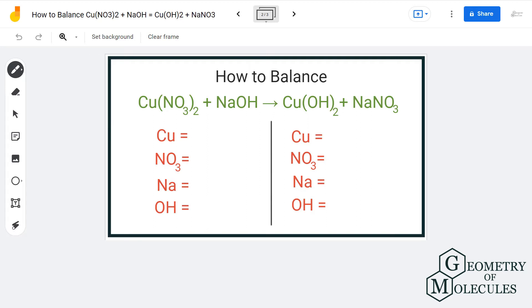We have one copper atom on the reactant side, one on the product side as well. We have NO3 group which are two in number for the reactant side, but we have only one group on the product side. For sodium we have one sodium atom on the reactant side and one sodium atom on the product side as well. We have one OH group on the reactant side and two OH groups on the product side.